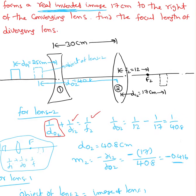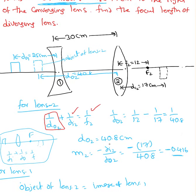Based on that, I found that value as 40.8 cm. Magnification factor is minus 0.416. Based on this, I found the object for lens 2 which is 40.8 cm.